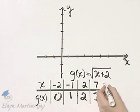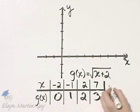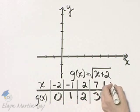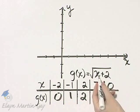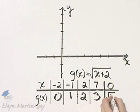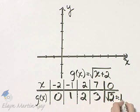By the way, if you'd like to find the y-intercept of this graph, you would let x be 0, and notice if x is 0, you have the square root of 2, that's approximately 1 and 4 tenths. So there's our y-intercept.